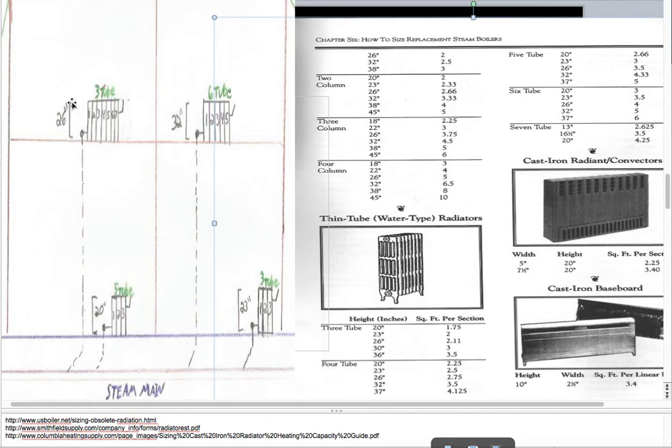So this first radiator here is 26 inches tall and it's a three tube. So there's your tubes going along this way from the front or the back, depending on where you're looking at it. It's 26 inches tall. Here's your height right there. Three tubes. You get 2.11 per section, we have one, two, three, four, five, six, seven sections.